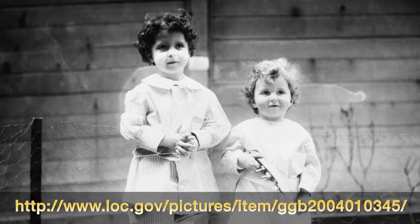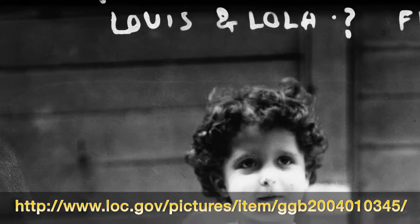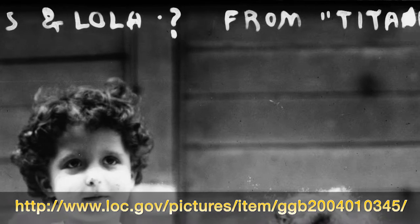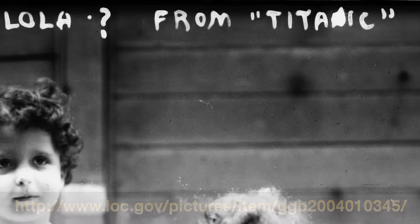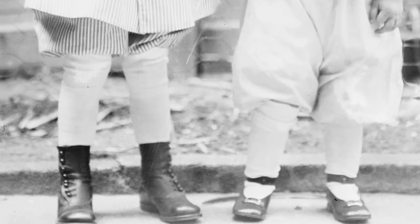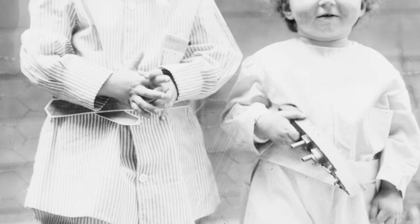The lesson continues on another day, examining another primary source. This one is a picture of two children. Are they two boys? A boy and a girl? Two girls? My students recognize that there's a heading — Lewis and Lola with a question mark — Survivors? This raises so many questions. The two children are dressed so differently from today. The students will again fill out a primary source organizer in pairs, small groups, as they collaborate and question together.